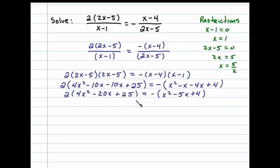Now we'll go ahead and distribute the two, leaving us with 8x squared minus 40x plus 50 equals negative x squared minus 5x minus 4. At this point to obtain standard form for this quadratic and get it equal to 0, we'll add x squared, subtract 5x, and add 4. That'll give us 9x squared minus 45x plus 54 equals 0.